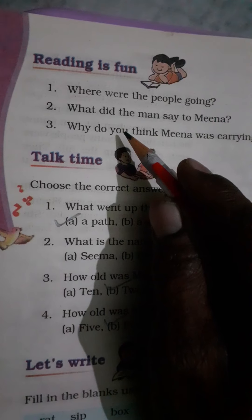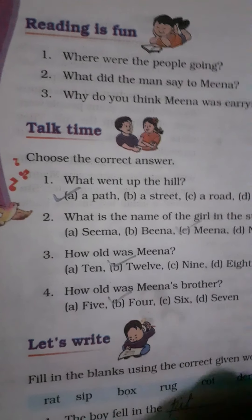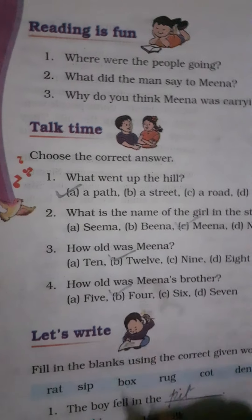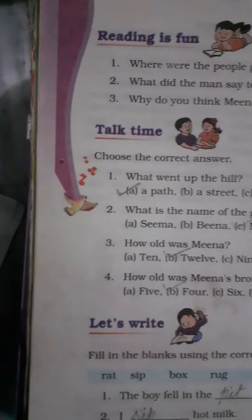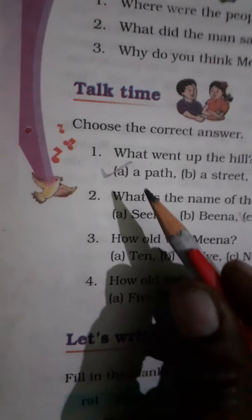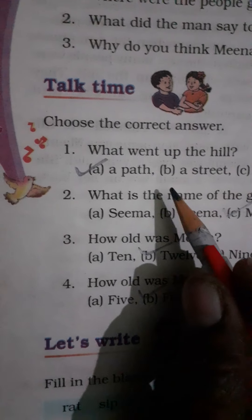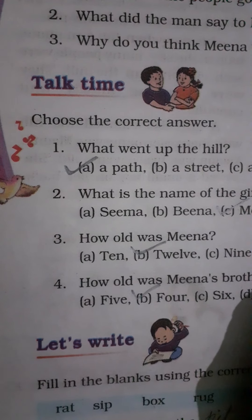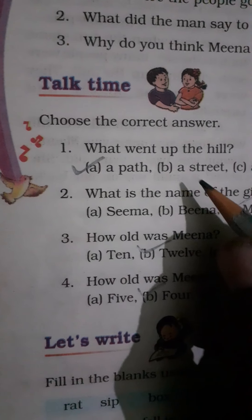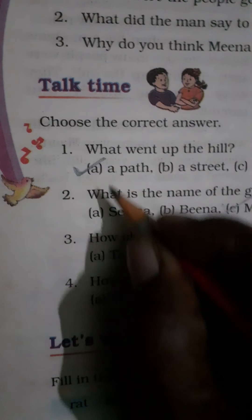Note down the answers in your copy and share on WhatsApp. Now, multiple choice question one: What went up the hill? Options are: a path, a street, a road, and a rail line. The answer is: a path. A path went up the hill.